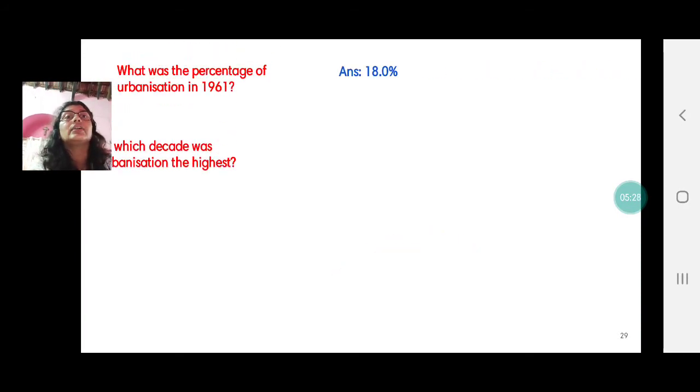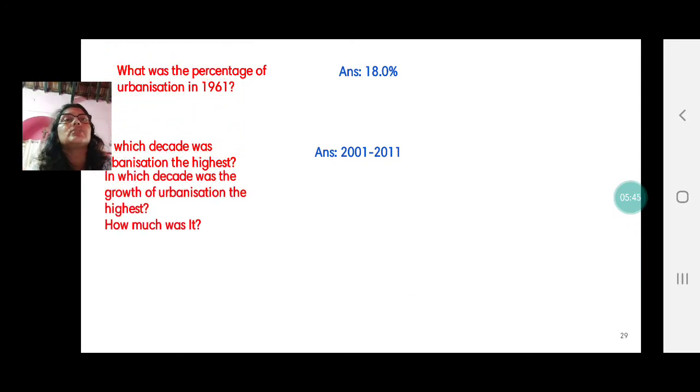Therefore the decade was 2001 to 2011 when urbanization was the highest. We are not talking about the rate. We are just talking about highest urbanization percentage. So 2001 to 2011.